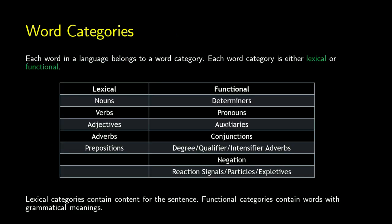When you have a word in a language, it has to belong to some word category — this is where we get crossover with syntax. There are lexical words — nouns, verbs, adjectives, adverbs, and prepositions — and functional words. Functional words include determiners like 'the', pronouns like 'I', auxiliaries like 'was' or 'have', conjunctions like 'and', degree words like 'quite', negation like 'not', and reaction signals, particles, or expletives like 'yes', or 'it' in 'it is raining'.